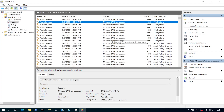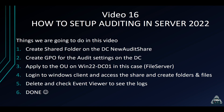That pretty much concludes the video. To recap: we enabled auditing for folders and files, created a new share, created and applied a Group Policy to the domain controller, accessed the share from Windows 11, created and deleted files and folders, and verified the logs in Event Viewer. Hopefully you liked it — hit that thumbs up, share, and subscribe. Until next time, have a beautiful day!